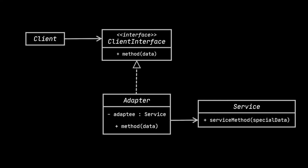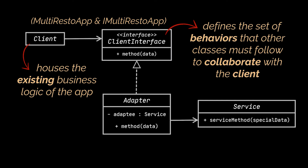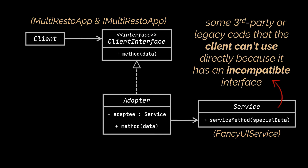Let's take a look at the structure or class diagram of the adapter design pattern while relating it to the example we just implemented. The first classes you are going to notice are the client and its interface, which were represented by the multi-resto app and the I-multi-resto-app classes. The client houses the implementation of the existing business logic of the program, and the client interface defines the set of behaviors that other classes must follow to be able to collaborate with the client code. Next is the service class, which was represented by the fancy UI service in our previous example — usually some third-party or legacy code that clients can't use directly because it has an incompatible interface.